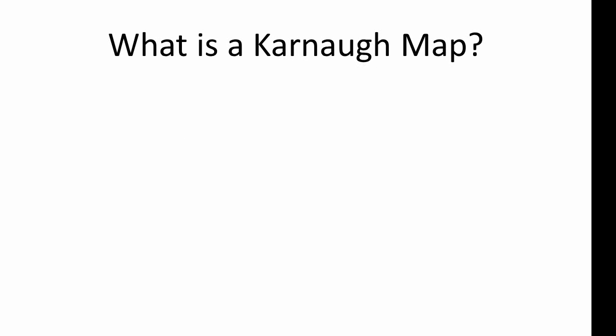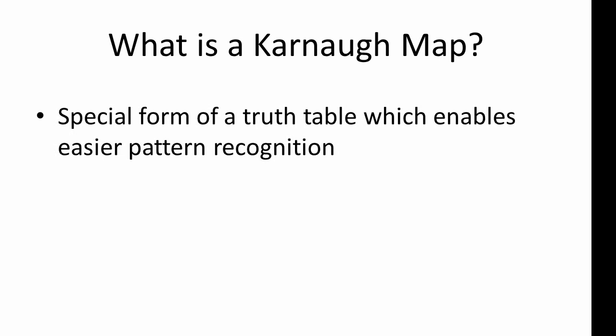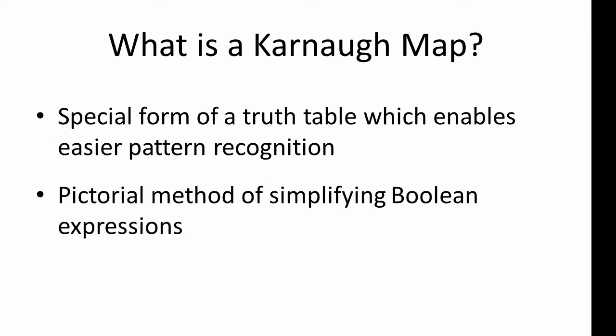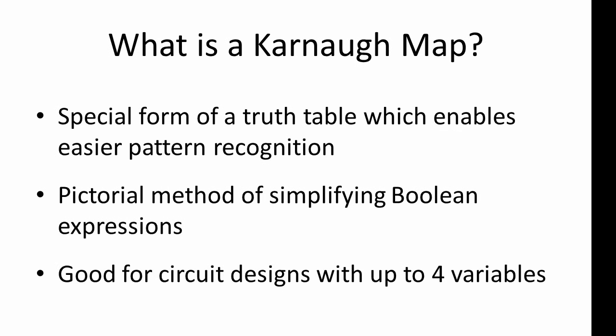So what is a Carnot map, or a K-map as they're sometimes known? It's a special form of truth table which enables easier pattern recognition than a truth table does. It's a pictorial method of simplifying Boolean expressions, good for circuit designs with up to four variables — that's four inputs.